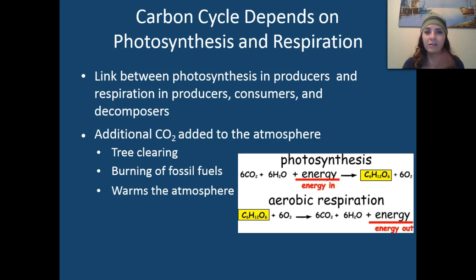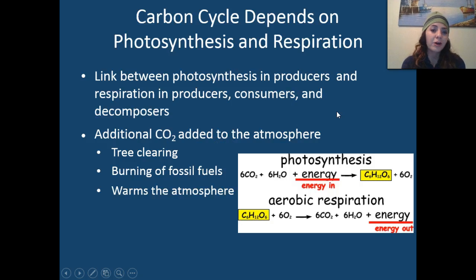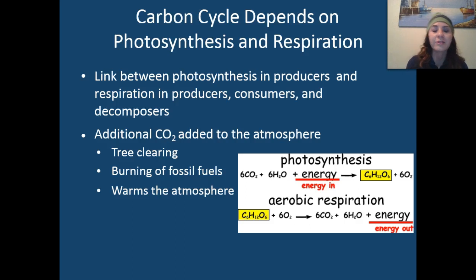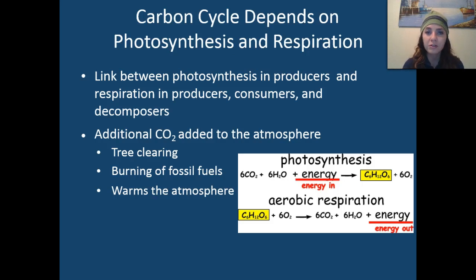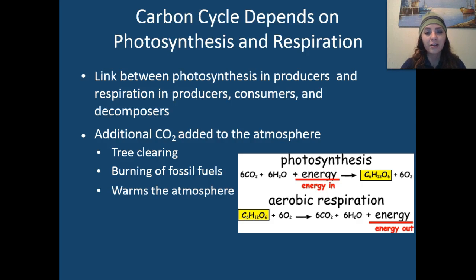The addition of carbon dioxide to the atmosphere can occur through tree clearing — we go in and clear all of the trees in a forest to use them to build houses, make flooring, that type of thing. Whether it's a rainforest or a deciduous forest, we're clearing trees which removes organisms that utilize carbon dioxide and produce oxygen. We also have the burning of fossil fuels that contributes carbon dioxide to the atmosphere, and this causes the atmosphere to warm.